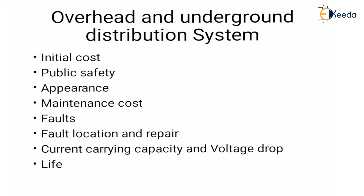An overhead distribution conductor has considerably higher current carrying capacity compared to underground cable for the same material and cross-section. Lastly, the life of an underground system is much longer compared to the overhead system because it requires less maintenance, is provided with better insulation, and has fewer chances of faults.